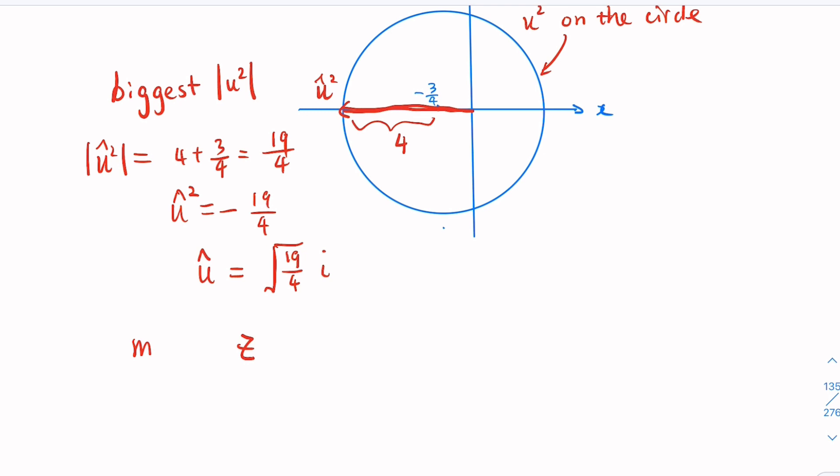The maximum of imaginary part of z is also equal this quantity here, which is square root of 19 over 4, or 2 square root of 19. So m plus n equal 19 plus 2 equal 21.